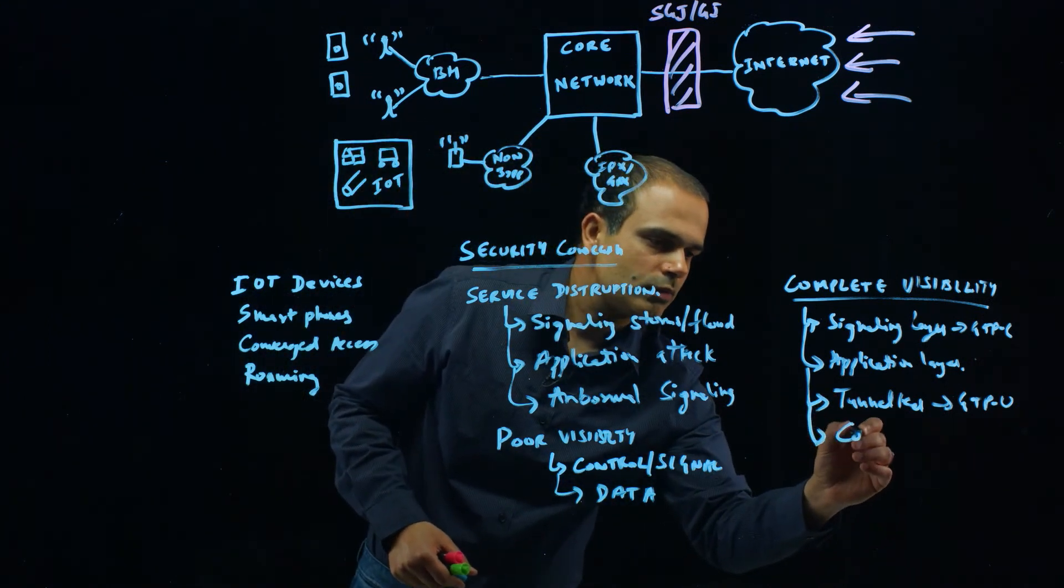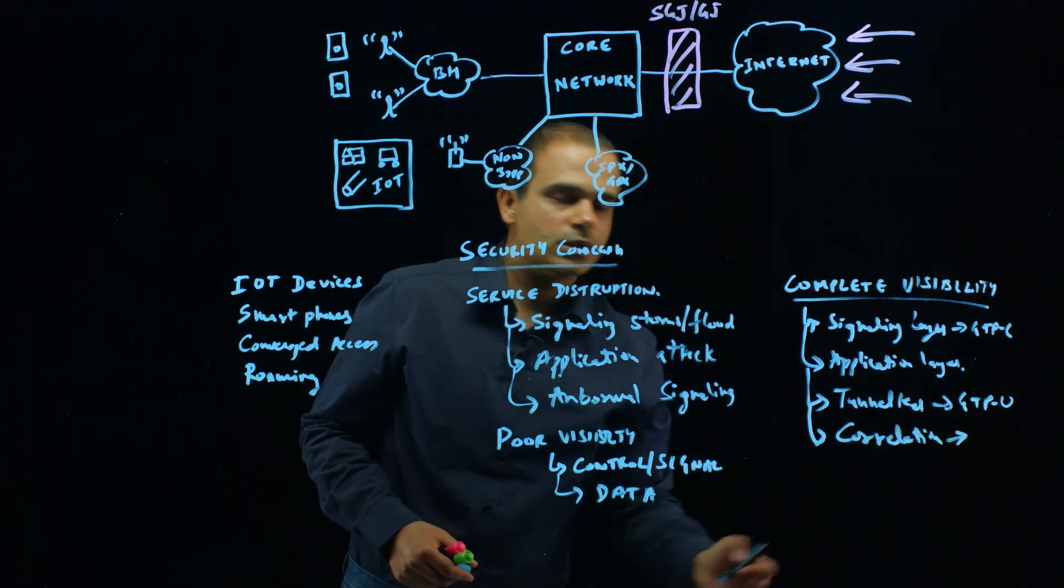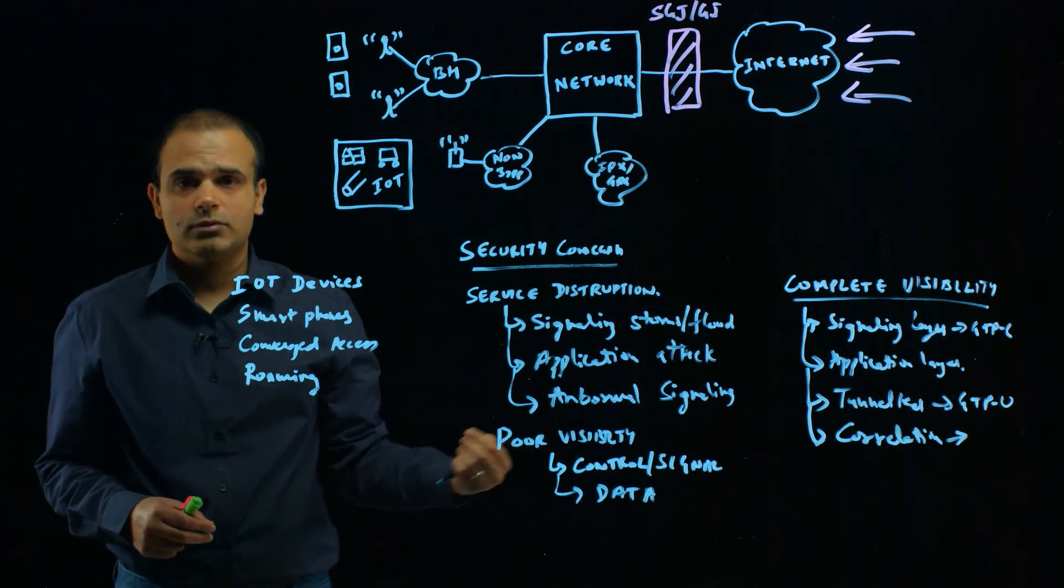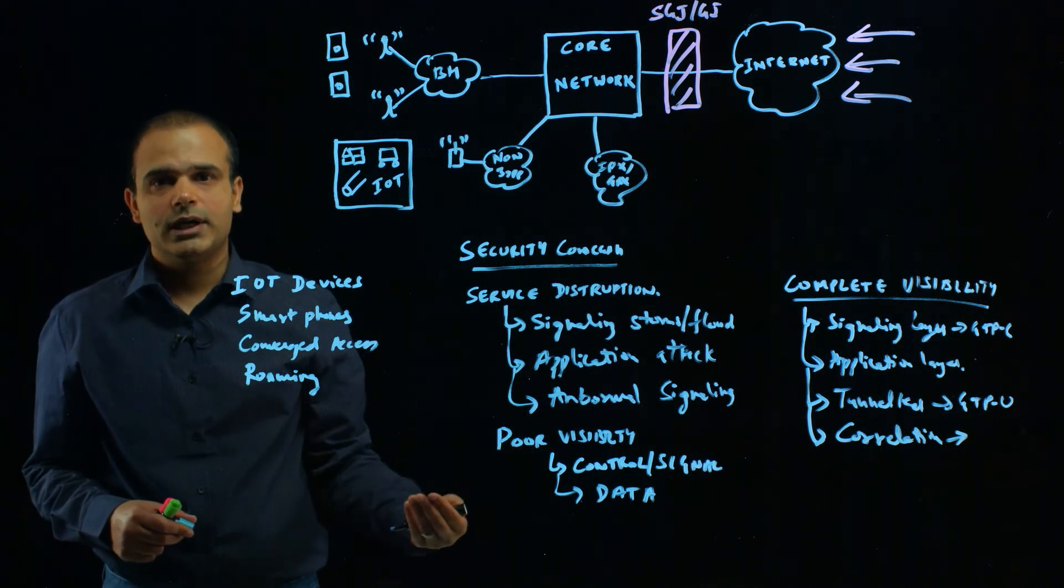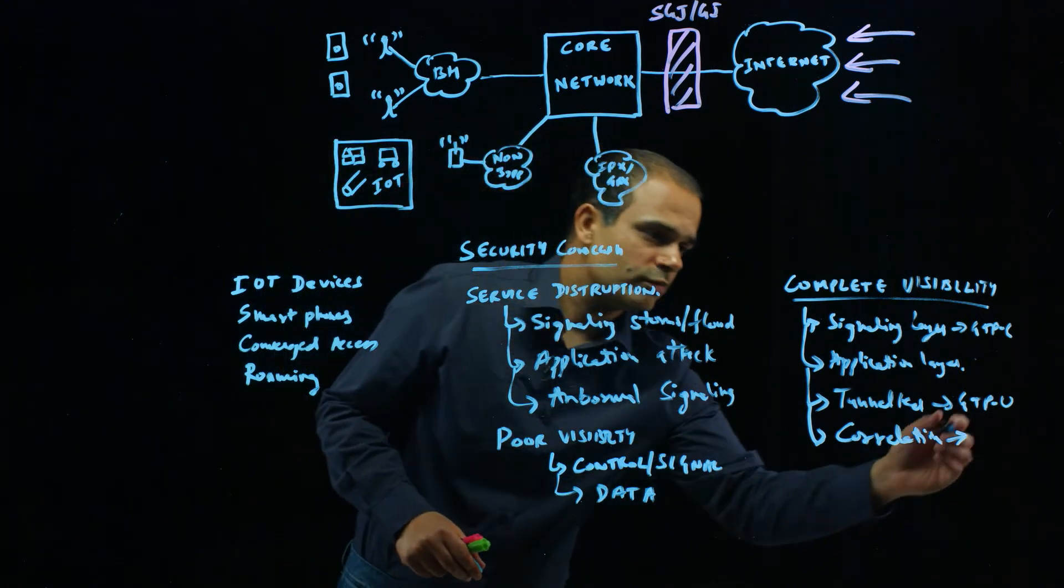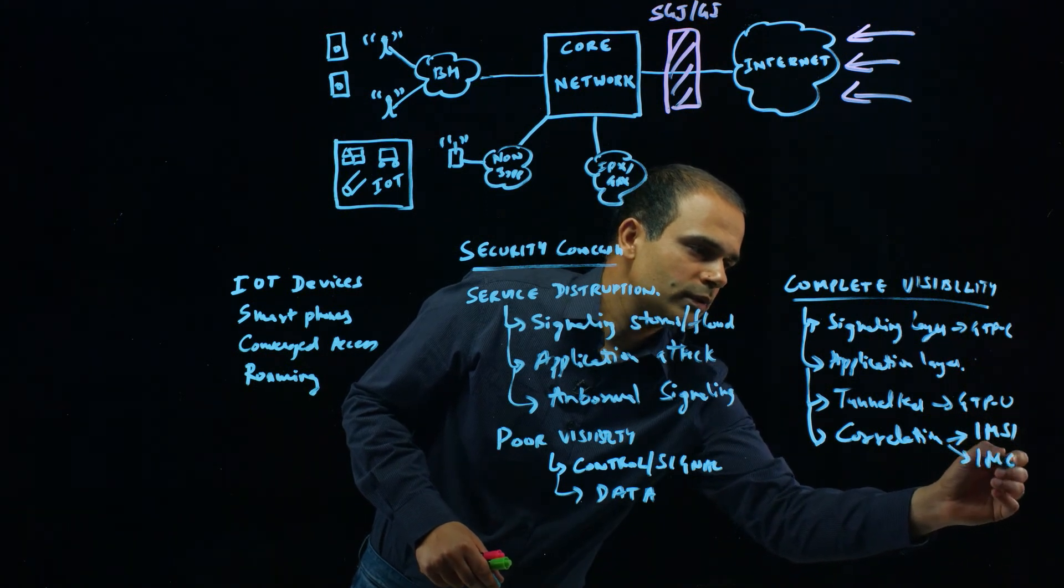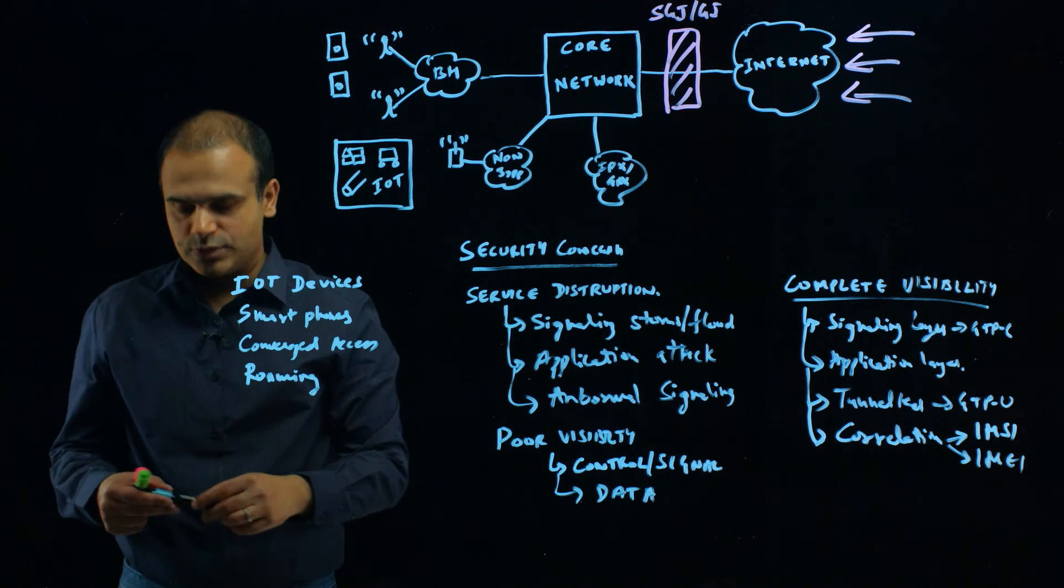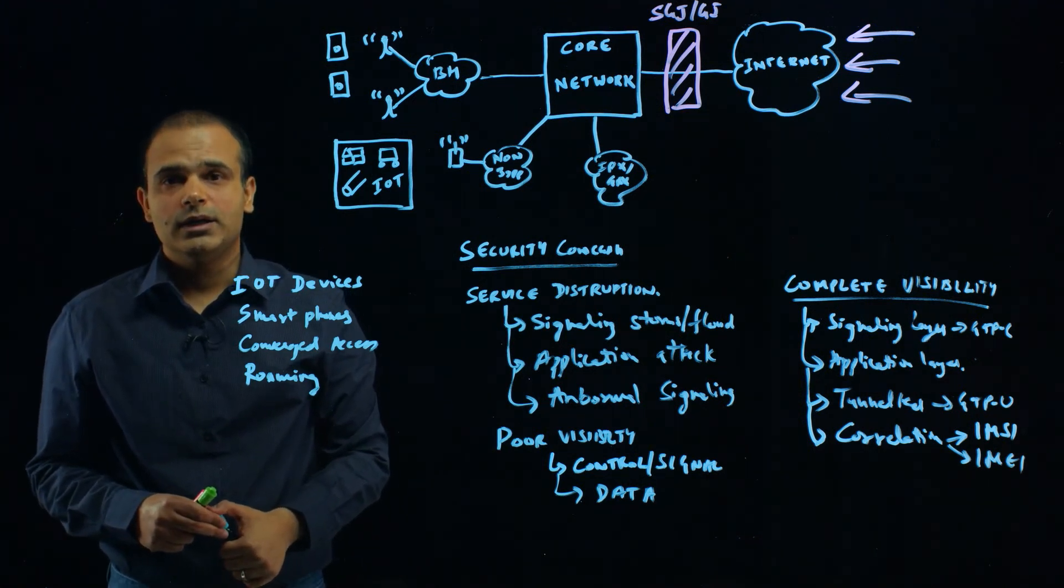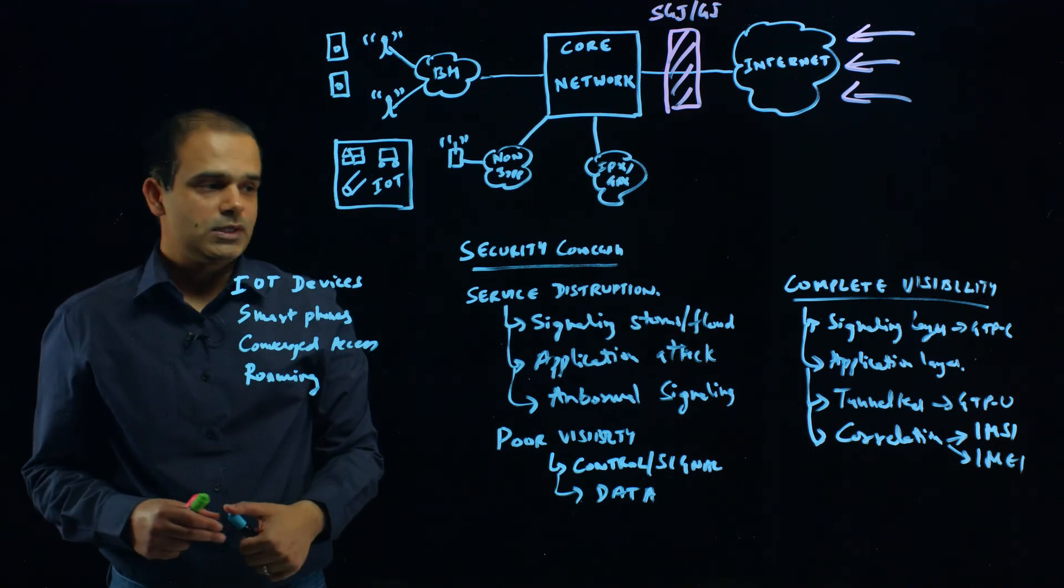Another one is correlation. This correlation is between the IP traffic flowing inside and the control traffic flowing inside the mobile network, as well as the signaling traffic. We can provide correlation with IMSI and IMEI. IMSI is the International Mobile Subscriber Identity, which is the SIM card identification number. IMEI is the Equipment Identity, which is your device ID.